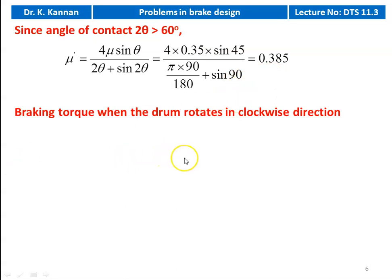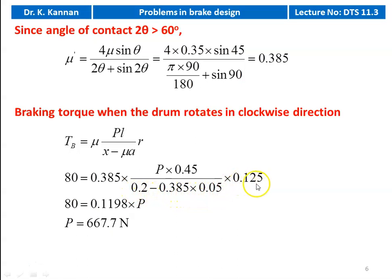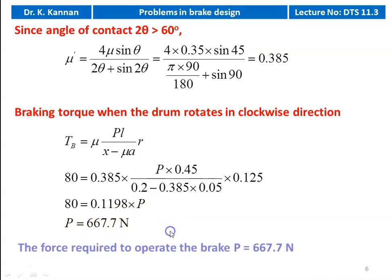Braking torque when the drum rotates in the clockwise direction: Tb = μ' × P × L / (X − μ' × A) × R. The braking torque is given as 80 Newton meter. Substituting: 0.385 × P × 0.45 / (0.2 − 0.385 × 0.05) × 0.125. Simplifying the right-hand side gives 0.1198 × P. Therefore, the force required to operate the brake, P = 667.7 Newton.